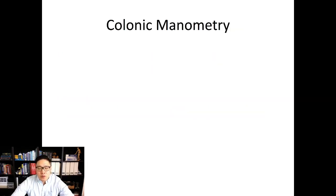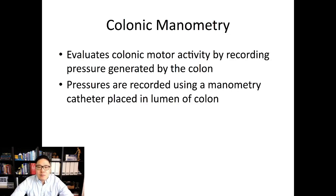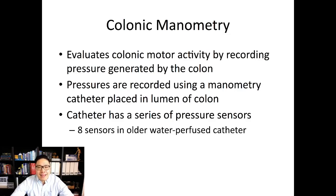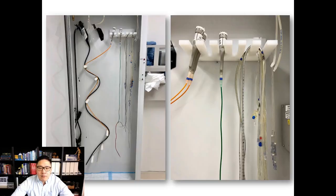We'll talk about colonic manometry first. Colonic manometry evaluates colonic motor activity by recording pressure generated by the colon, using a catheter placed inside the colon with a series of pressure sensors arranged along it. The older water-perfused catheters have eight sensors per catheter and the newer solid-state catheters have 36. Water is pumped through each tube and the resistance to that water flow is what's being measured. Now we primarily use solid-state catheters, which are hooked up directly to a computer.